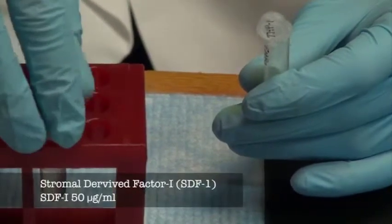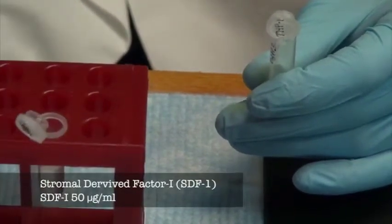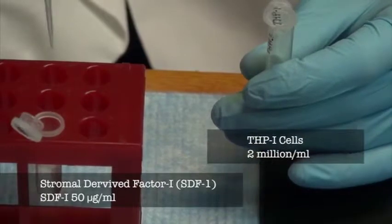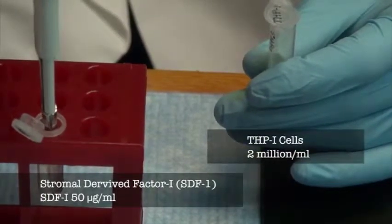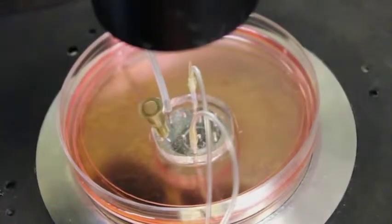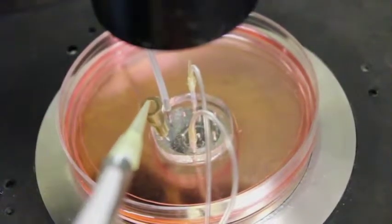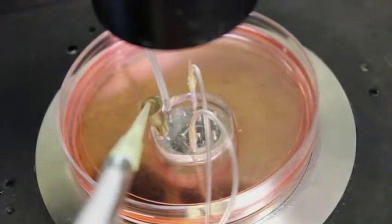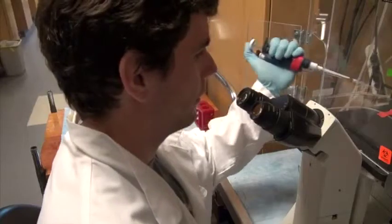THP1 cells stimulated with SDF1 are suspended at a concentration of 2 million cells per milliliter. Within 2 minutes of flow activation, 50 microliters of cell suspension are added to the reservoir, again taking care not to introduce air bubbles.